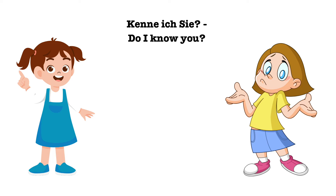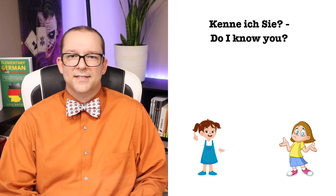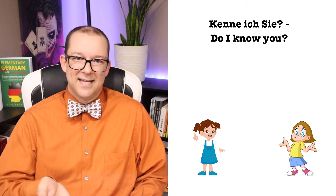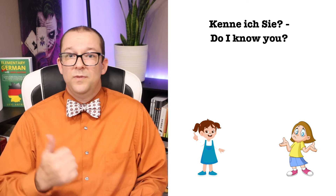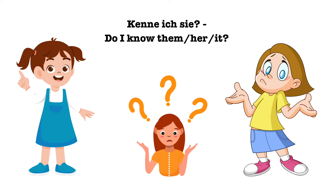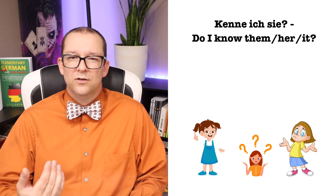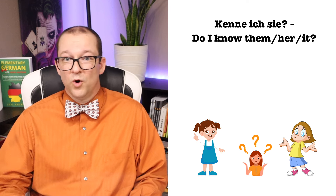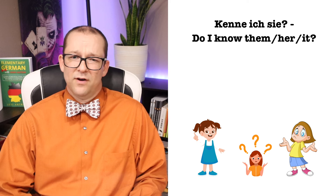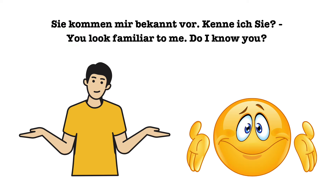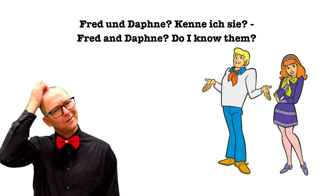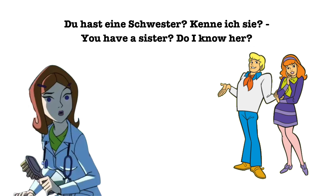'Kenne ich sie?' — Do I know you? In this sentence, I know the translation is 'you' only because 'Sie' is capitalized. If it were lowercase, it could be them, it, or her. When said out loud, there is no way to know which meaning is intended without context. With context: 'Sie kommen mir bekannt vor. Kenne ich sie?' — You look familiar to me. Do I know you? Or: 'Fred und Daphne? Kenne ich sie?' — Fred and Daphne? Do I know them? Or: 'Du hast eine Schwester? Kenne ich sie?' — You have a sister? Do I know her?